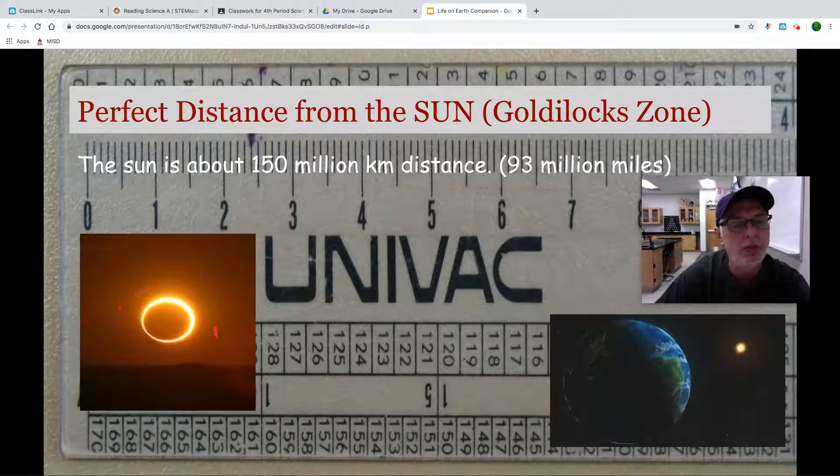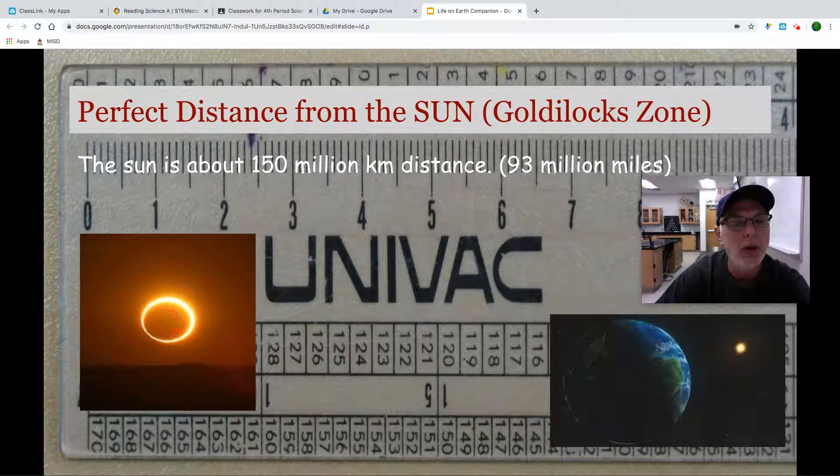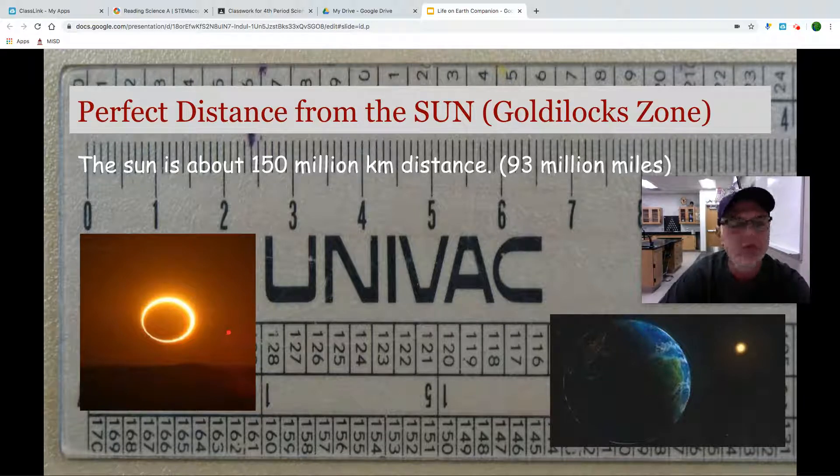Interestingly enough, on this picture, this is an eclipse. So this is the moon actually coming between us and the sun, and that's why it is covering it here. This is a very unique thing. If you ever have an opportunity to observe an eclipse, do it.